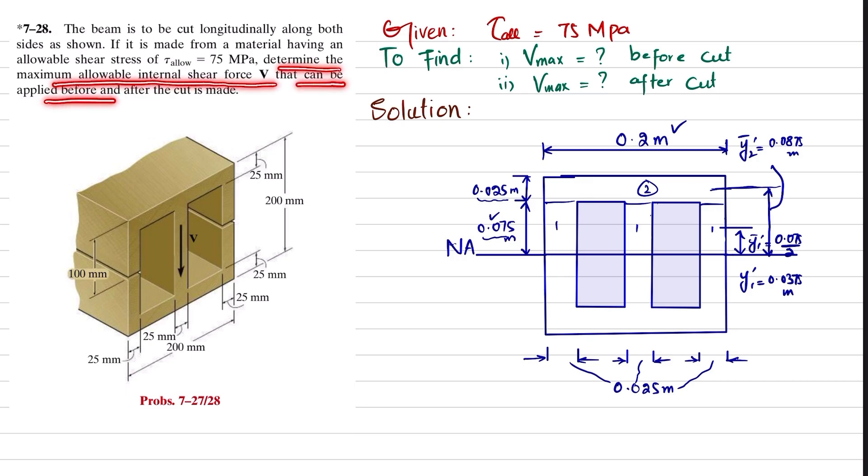So you can see this is the beam that is cut longitudinally on both sides of the beam, and it's made of material having allowable shear stress 75 megapascals. We have to find this V before this cut and after this cut is made.